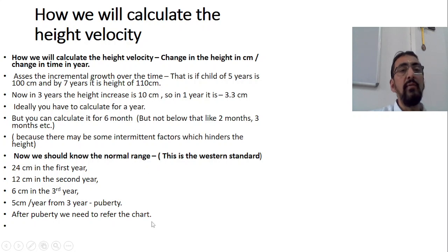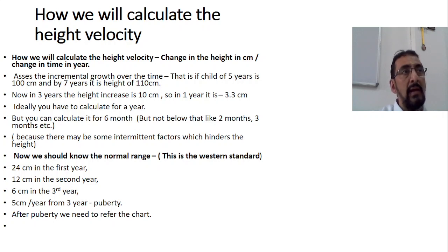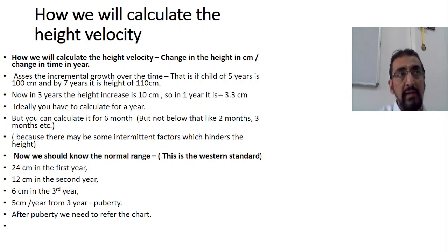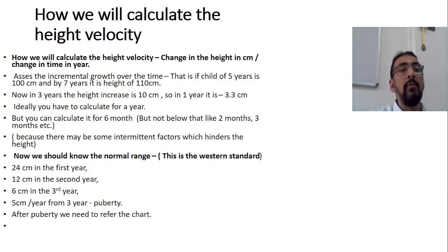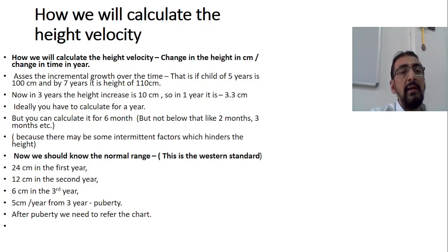For identification of short stature there are three important things: number one, plotting on the height chart; number two, finding the target height using the parental height formula; number three, calculating height velocity. Height velocity is the change in height in centimetres divided by change in time in years. We assess the incremental growth over time.